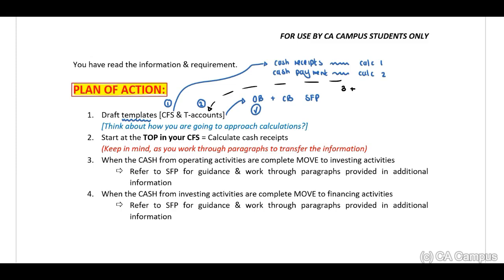I will start at the top of my cash flow statement and calculate my cash receipts. What is important to keep in mind: as you work through your paragraphs, you are in a zone. For example, if you are working with a paragraph where we have purchased a subsidiary, you are thinking about all of the implications that paragraph has. Immediately transfer the relevant amounts — that way you don't have to think about everything again. You need to start at the top, but as you work through an important paragraph and you know its implications, transfer your amounts and ensure that you have completed that paragraph.